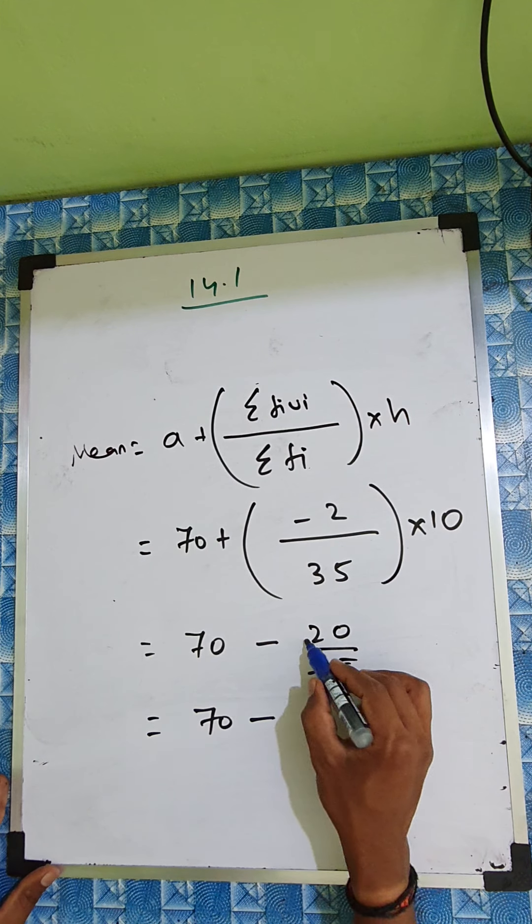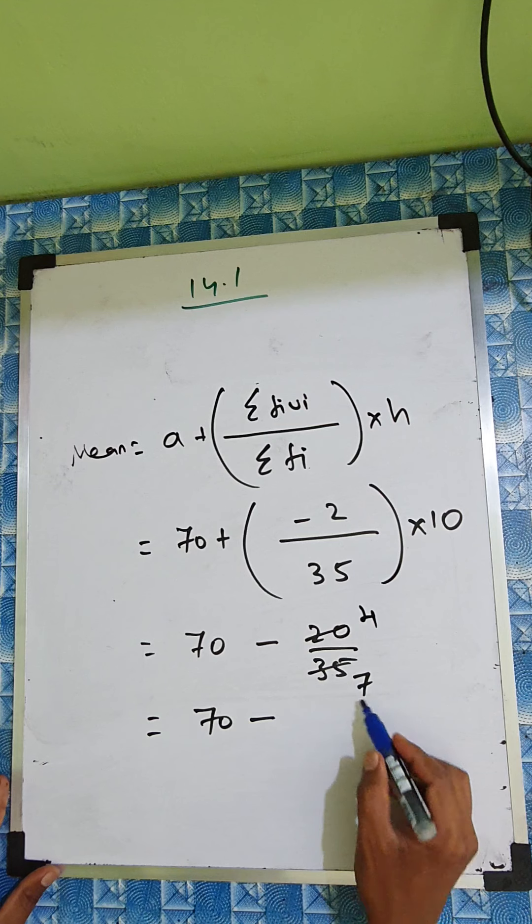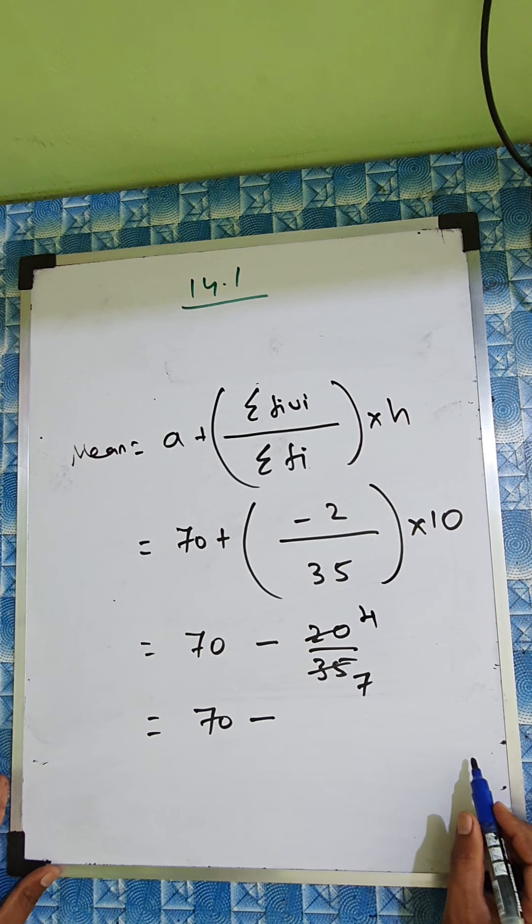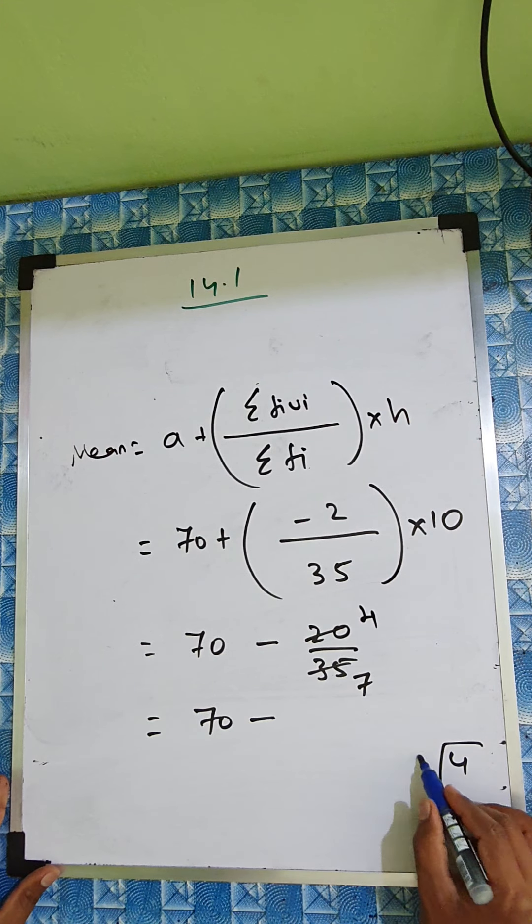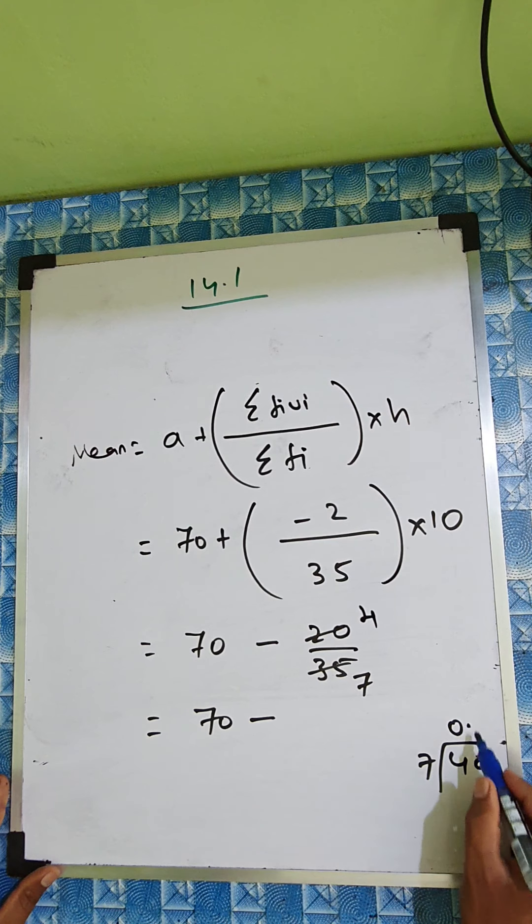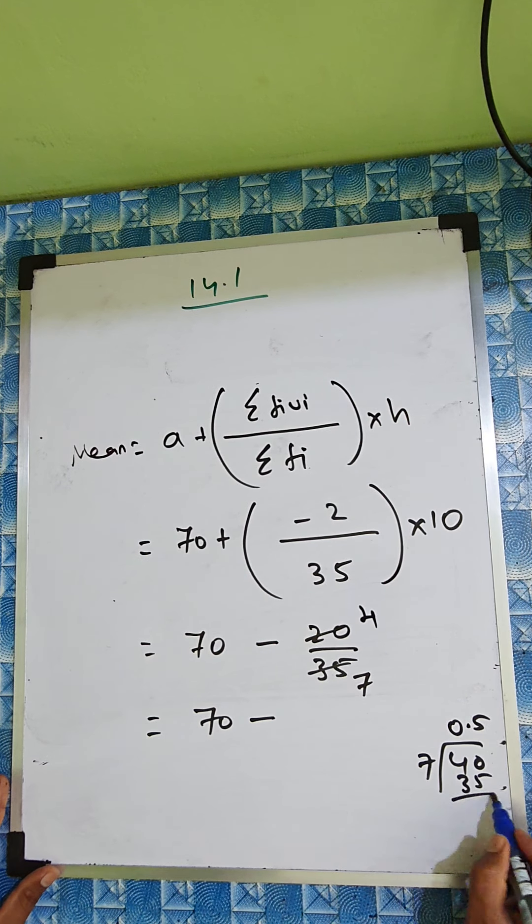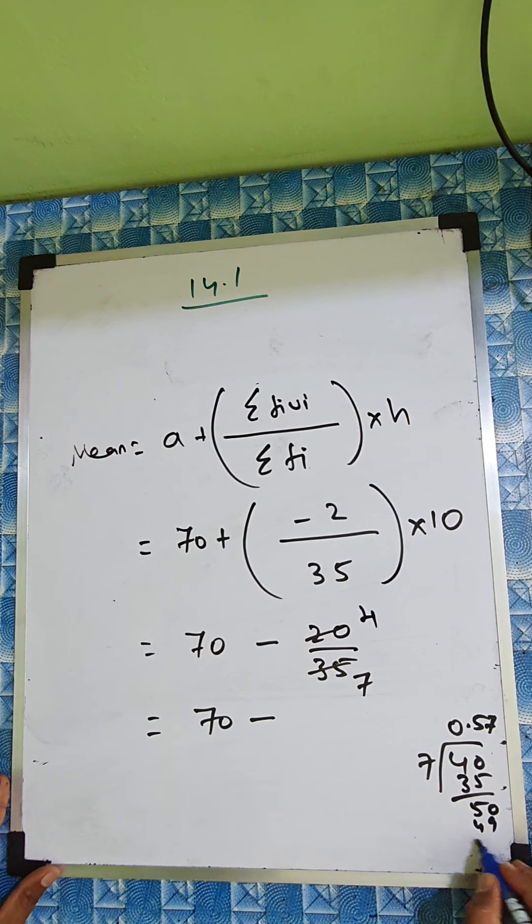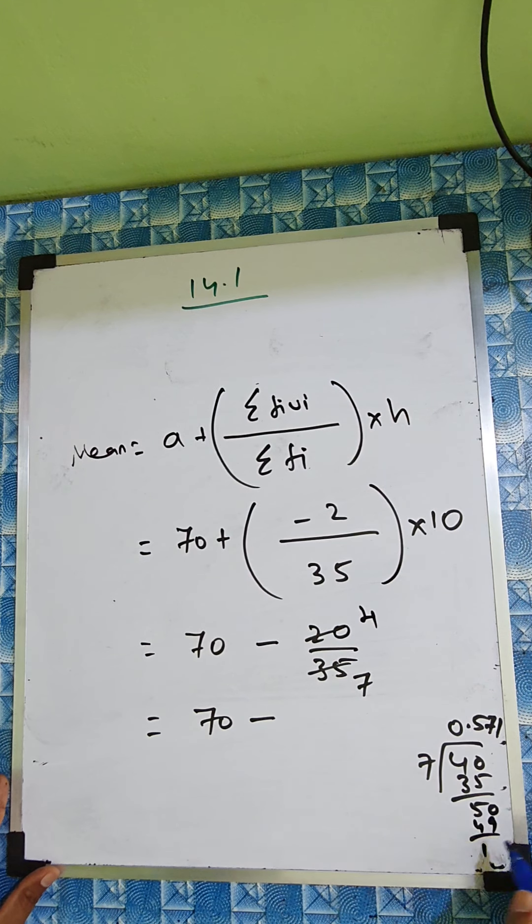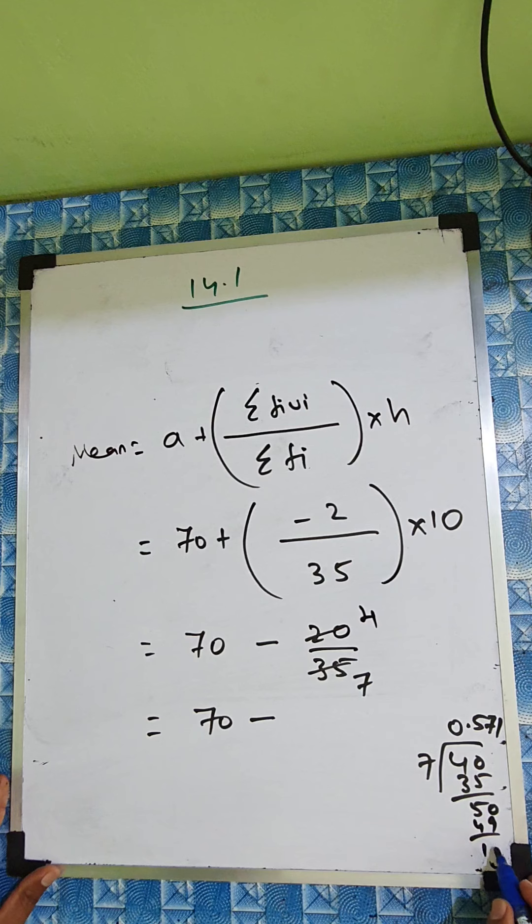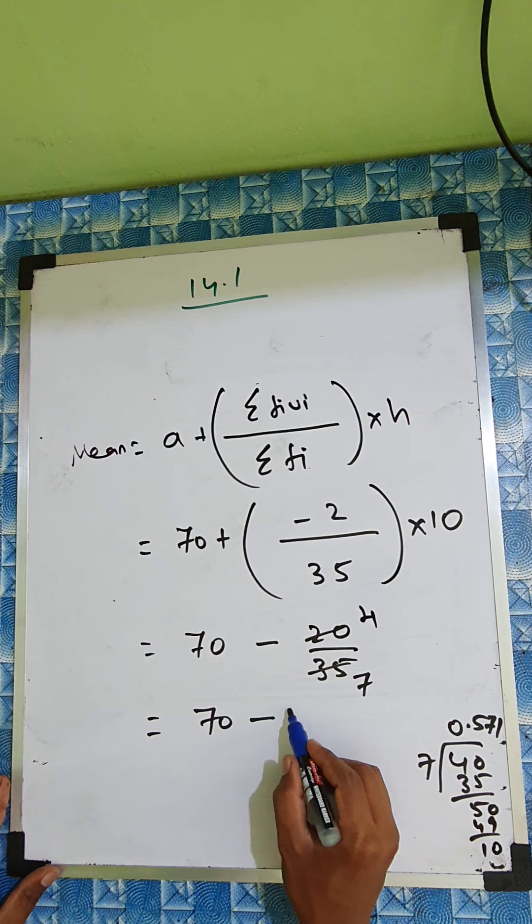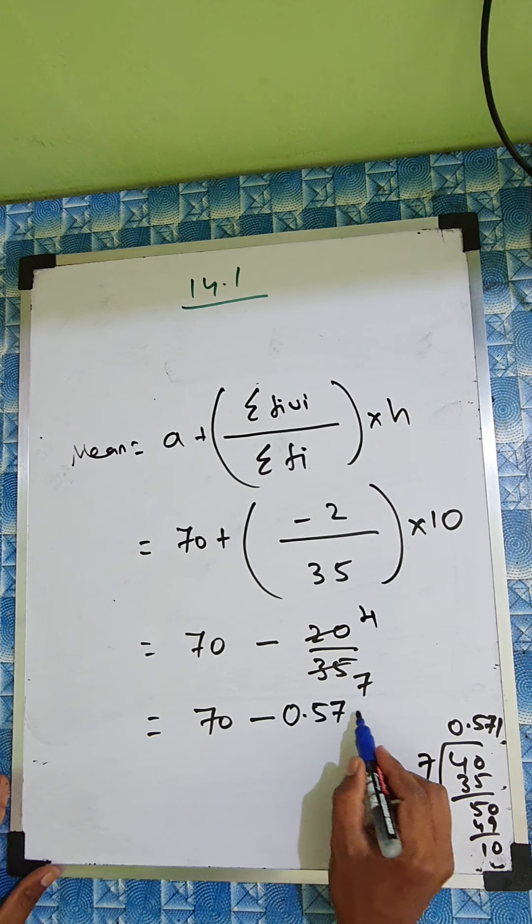So 20 by 35. 7 into 2 is 14, remind 6. 7 into 8 is 56. 7 into 7 is 49, remind 1. 7 into 1 is 7. Remind 3, 30. So it will go like that. So we'll just make 0.57 enough.